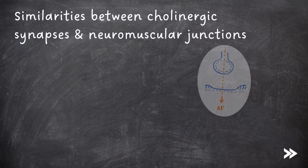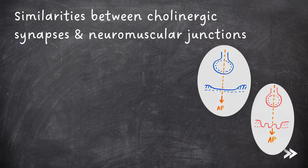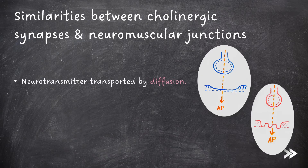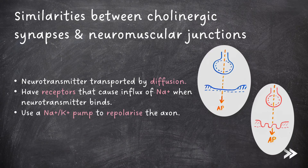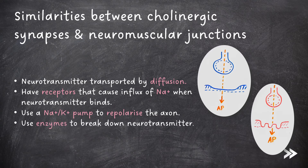There are also some similarities between cholinergic synapses and neuromuscular junctions. Neurotransmitter, for example, is transported by diffusion in both. Both have receptors that cause an influx of sodium ions when neurotransmitter binds. They also both use a sodium-potassium pump to repolarize the axon. And finally, both use enzymes to break down neurotransmitter.